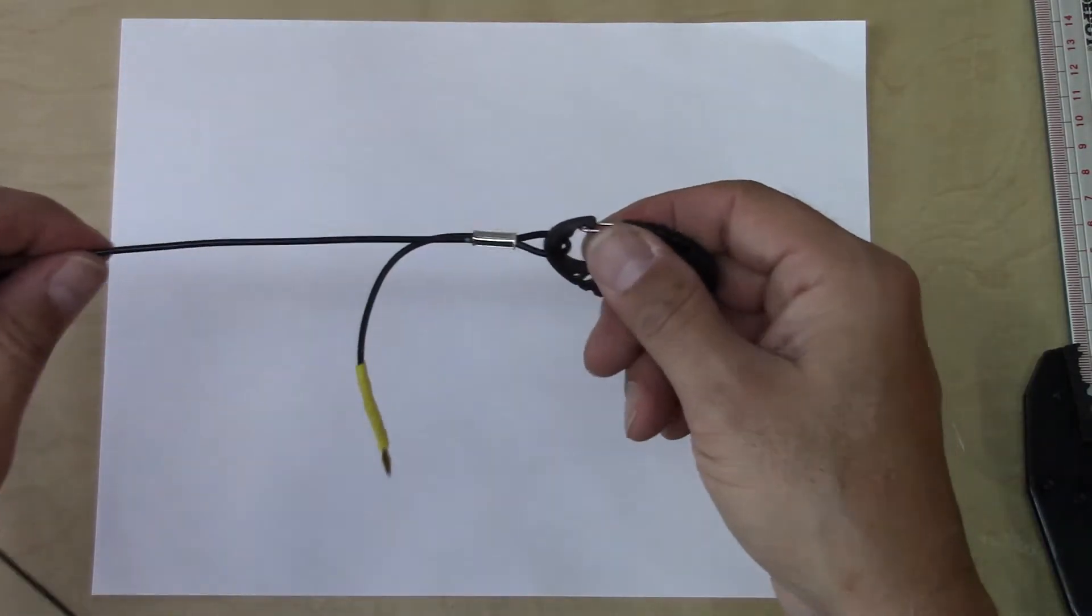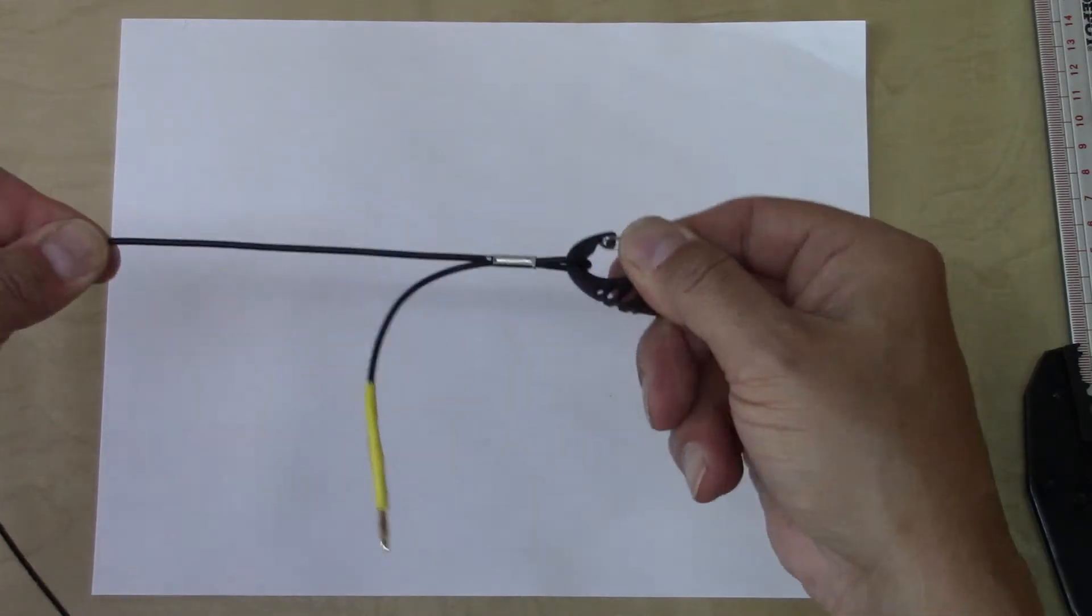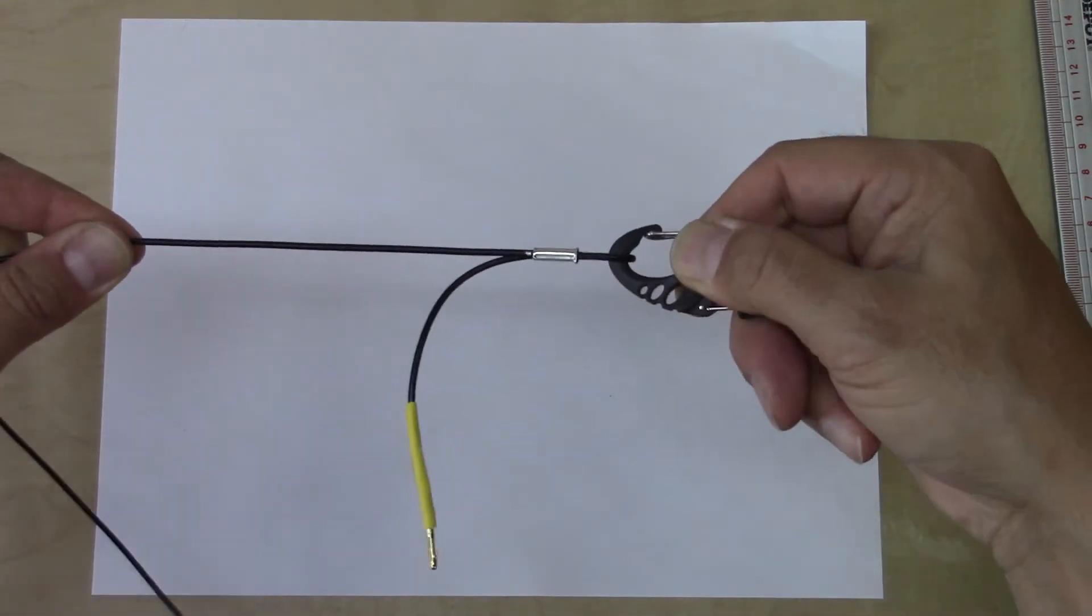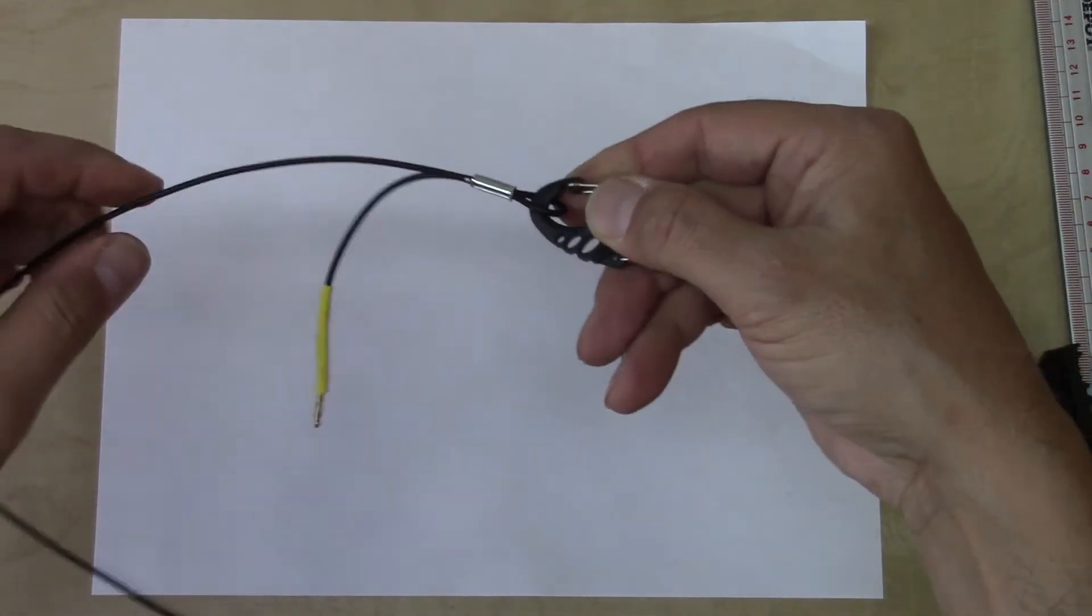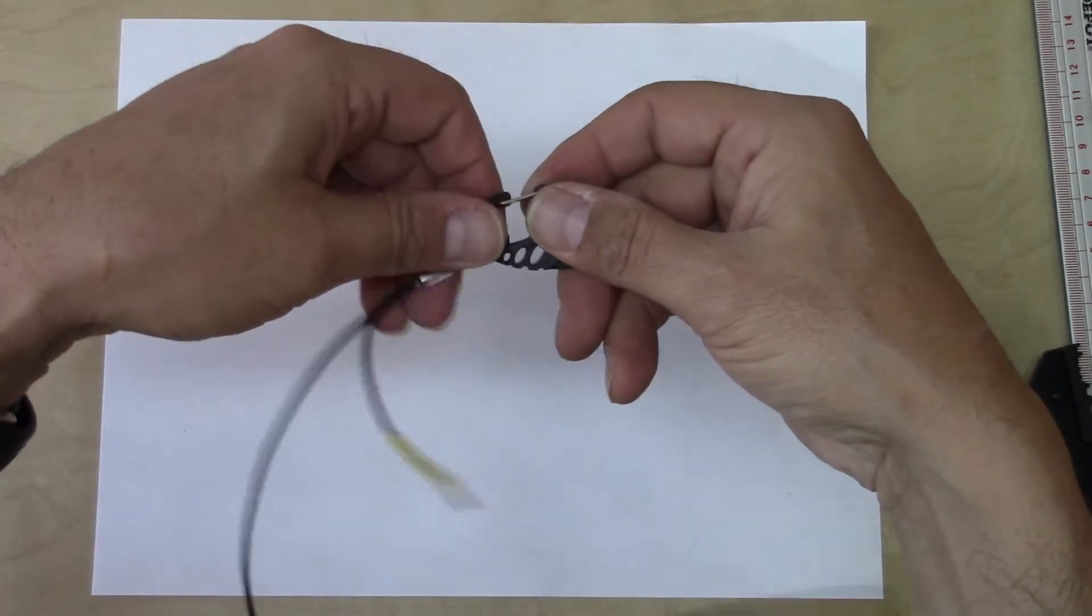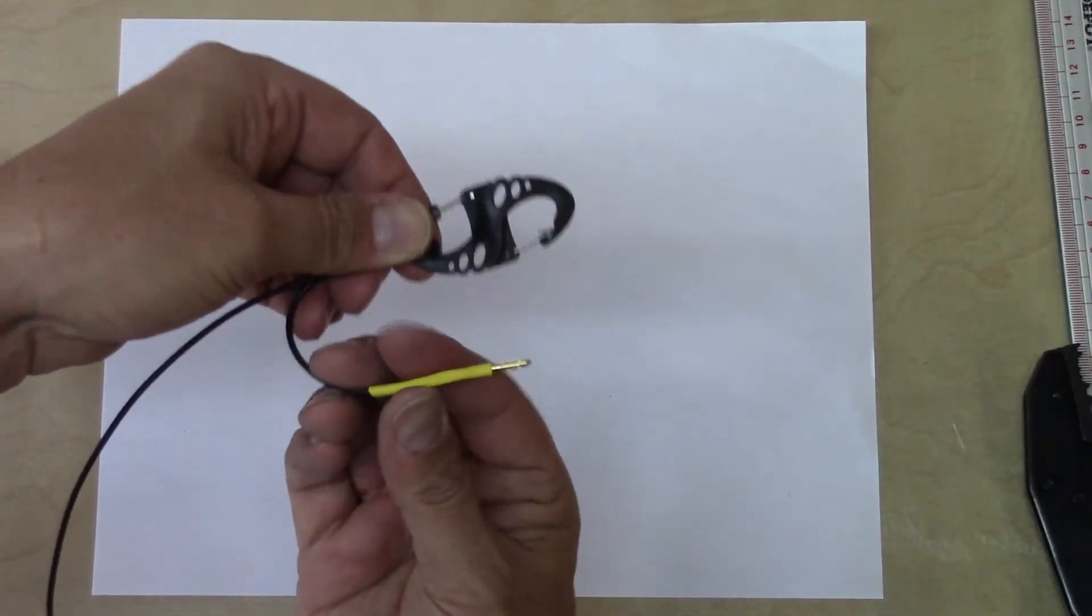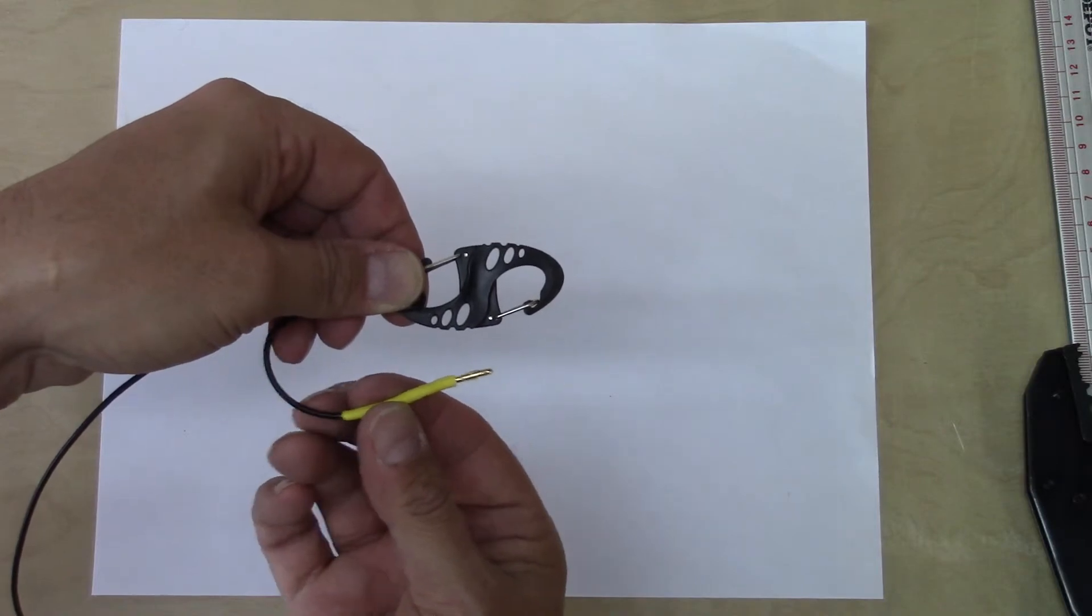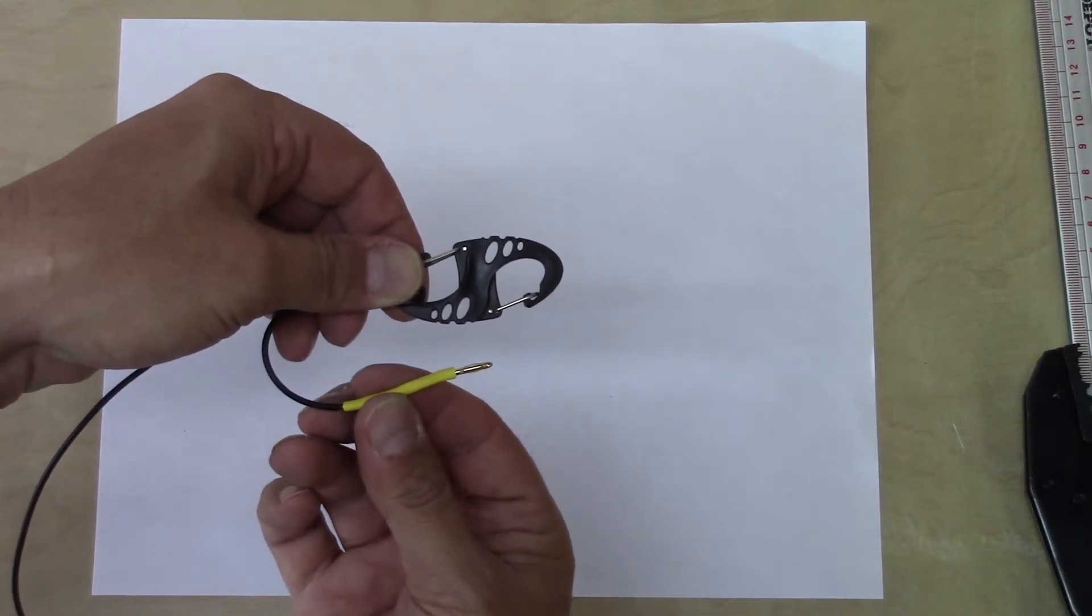The reason we do it this way is all the mechanical strain is taken by the wire, which is going through the ferrule. The electrical connection between the wire elements is being carried by the banana plugs and the banana sockets. There's no mechanical strain whatsoever on those connectors.